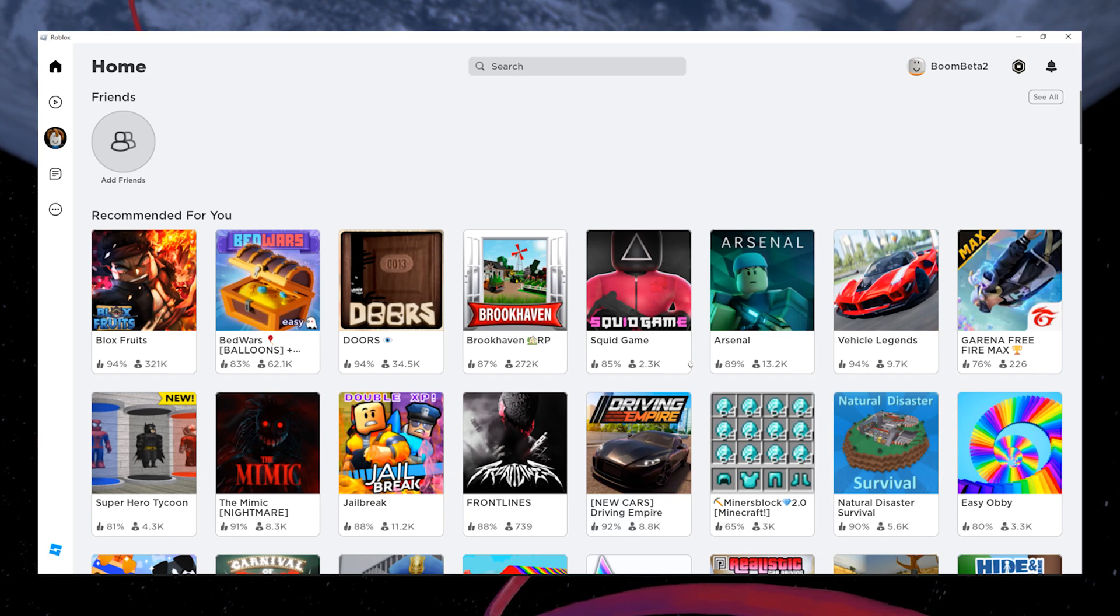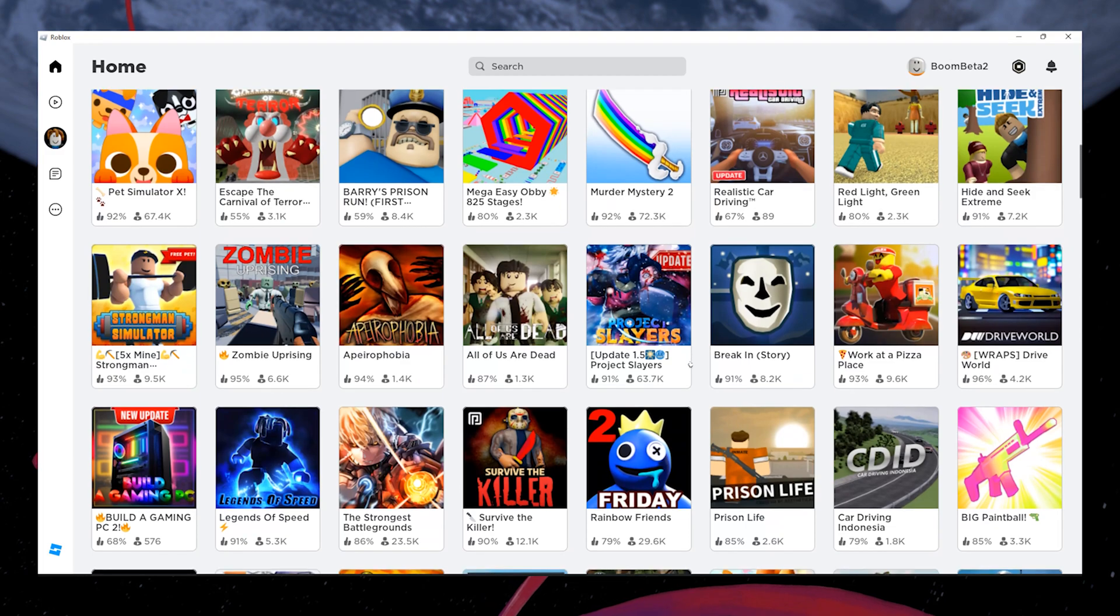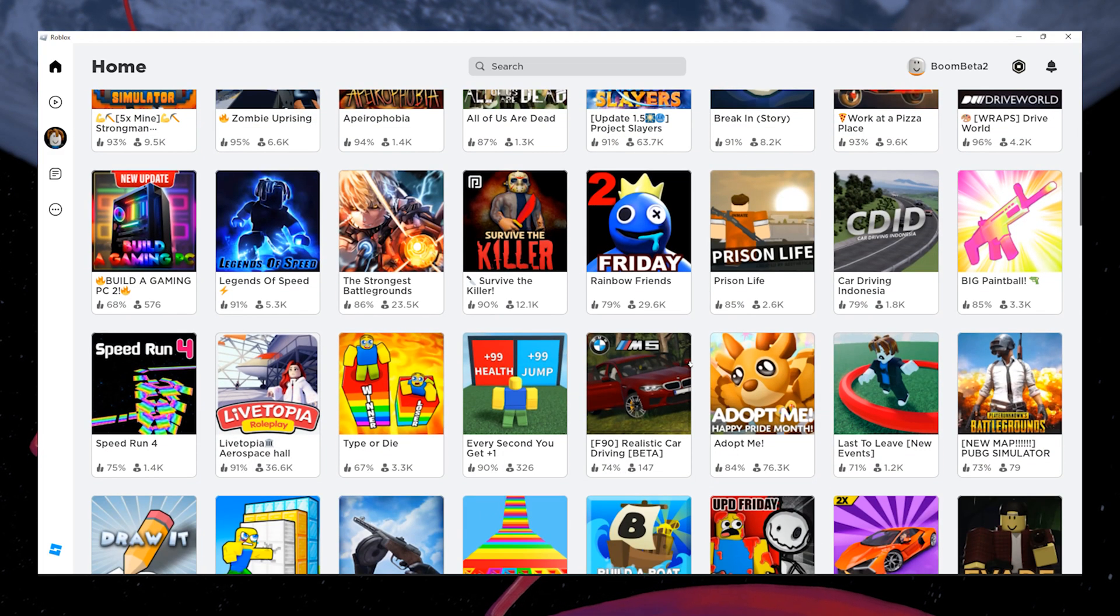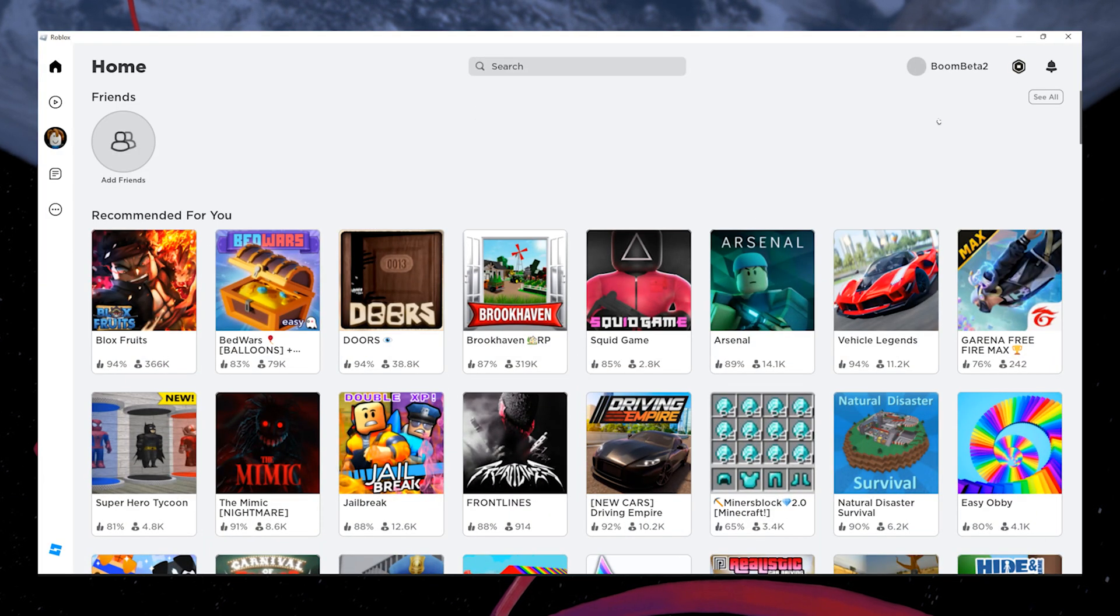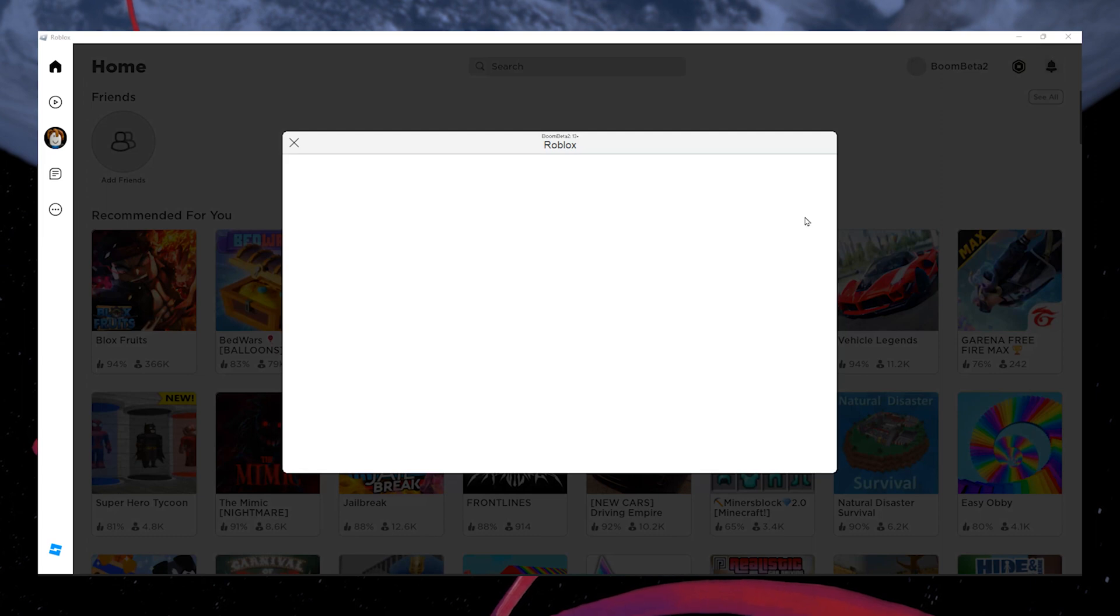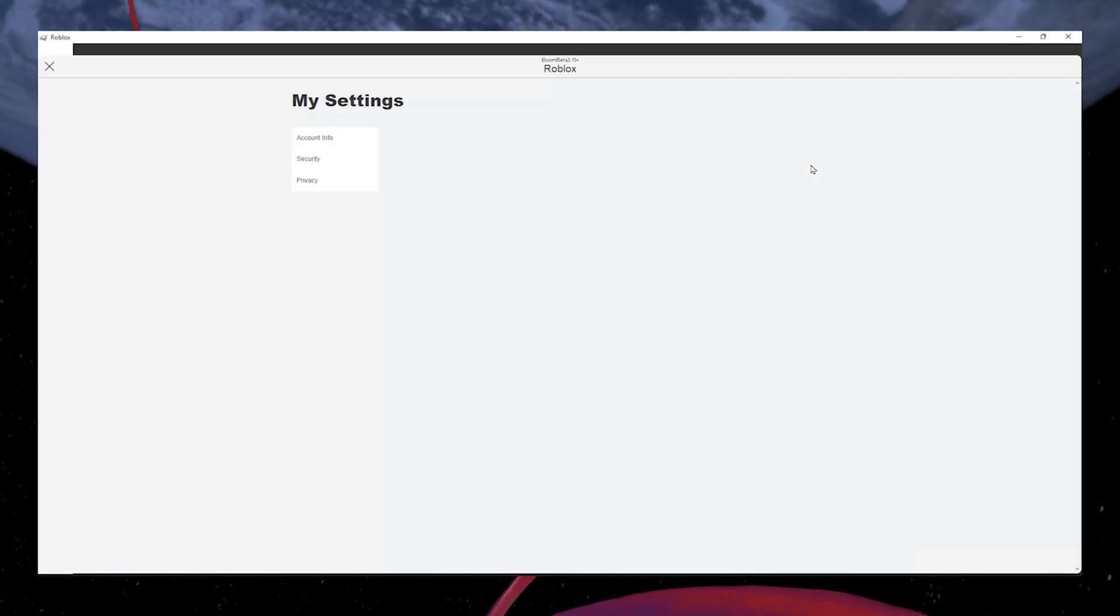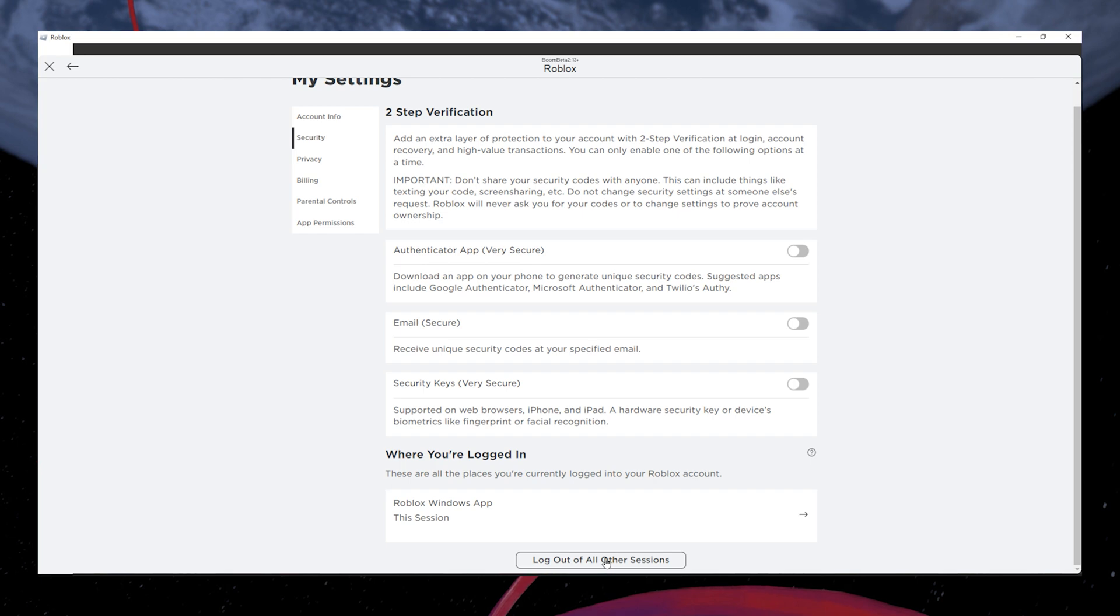The first step is to ensure you're logged out of all Roblox sessions. Sometimes, being logged into multiple sessions can cause conflicts and trigger the Teleport failed error. To log out of all sessions, open your Roblox app, click the gear icon to access your settings, and then select Settings from the drop-down menu. In the Settings menu, click on the Log Out button and make sure you're signed out of all accounts.